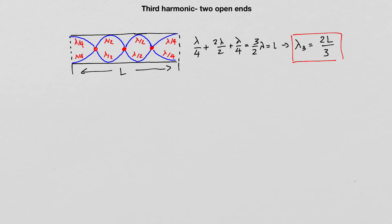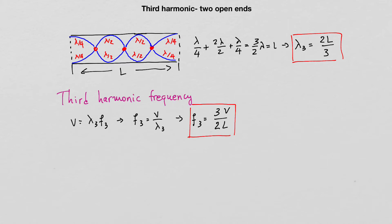From here, the wavelength of the third harmonic λ₃ is equal to two times the length of the pipe divided by three. Using V = λ₃ × f₃, the frequency f₃ = V / λ₃. Substituting 2L/3 gives the final result: the third harmonic frequency f₃ is equal to three times the speed of sound in air divided by two times the length of the pipe.